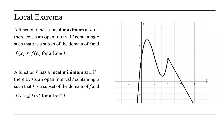Now let's consider the local minimum — this is the smallest y value or smallest output value in an interval. It looks like we have a local minimum here. Let's call this a3, and I can create an open interval around a3. For every x value in that interval, their corresponding y value will be greater than the y value at a3. So the output value at a3 is the local minimum for this function.